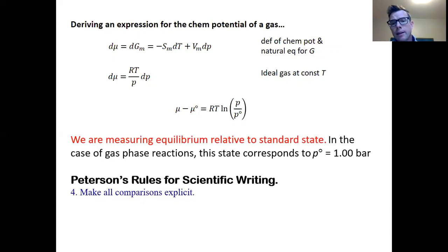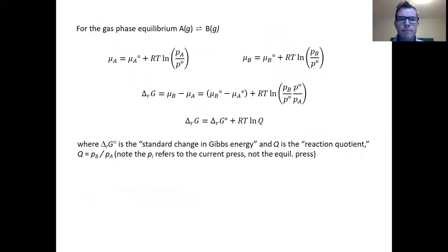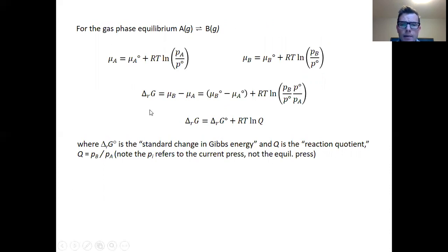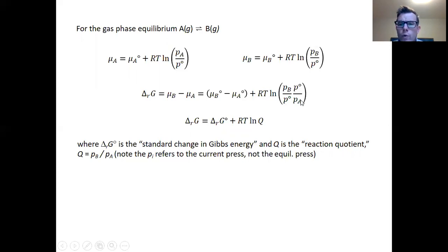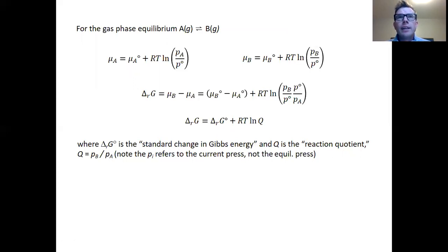Plugging this into the reaction A→B, the chemical potential of A is μA = μA° + RT ln(PA/P°), and similarly for B. Taking the previously derived equation delta G = μB − μA and substituting, I get μB° − μA° plus RT times a combined logarithm. We typically write this as: ΔrG = ΔrG° + RT ln Q, where ΔrG° is the standard change in Gibbs energy — a quantity you can look up and calculate from standard Gibbs energies of formation in the back of Atkins.